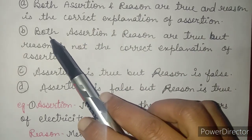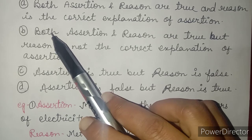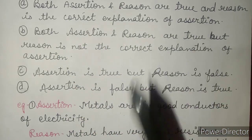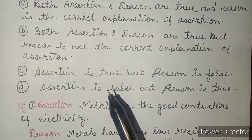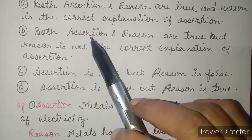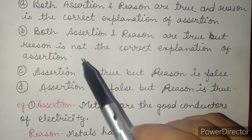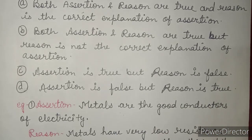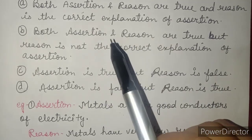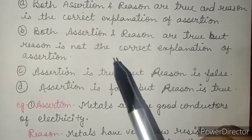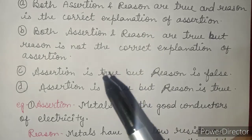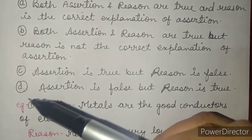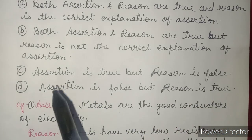The second option is: both assertion and reason are true, but reason is not the correct explanation of assertion — the reason does not correctly describe the assertion. We will see examples of all these later.